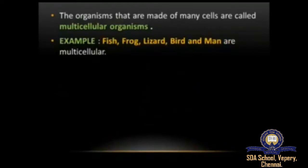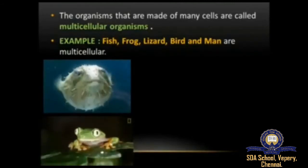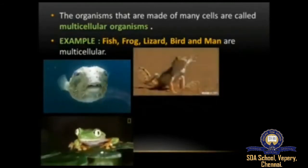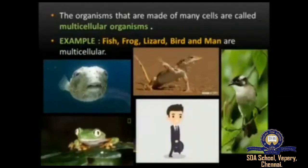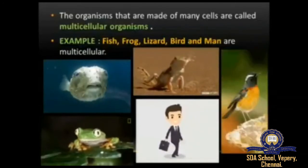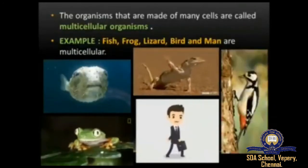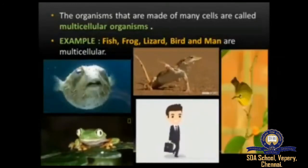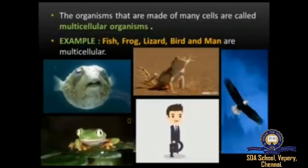Examples of multicellular organisms are fish, frog, lizard, bird, and man. These organisms are made up of two or many cells, and therefore are called multicellular organisms.